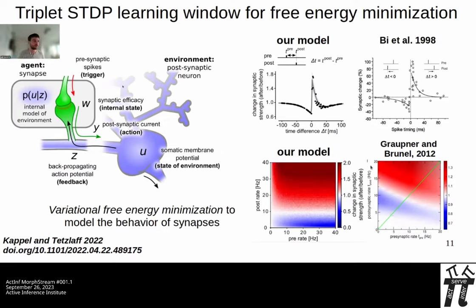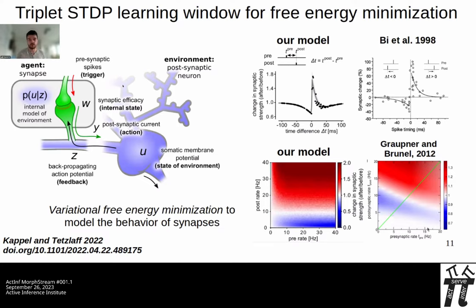We also have a dependency on the postsynaptic firing rate, which we can compare to the Graupner and Brunel model — a detailed model describing plasticity based on pre- and post-synaptic firing rate. If we inject random pre- and post-synaptic Poisson spike trains with different rates, our model predicts a shape that is not a perfect match but reflects the main features: low firing rates on the postsynaptic side lead to depression, and higher rates lead to potentiation.